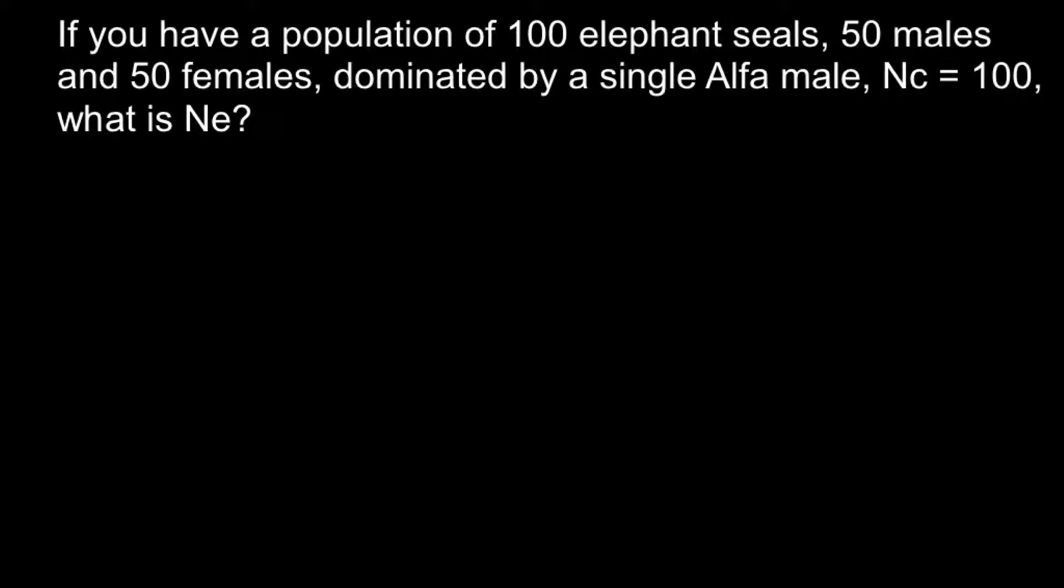If you have a population of 100 elephant seals, 50 males and 50 females, dominated by a single alpha male, where NC, or number of population census, would be 100, what is NE, or effective population number?